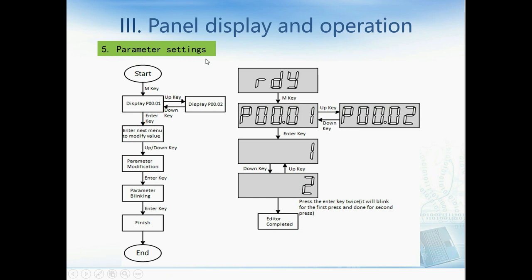Here I will show you how to control from the front panel. First, we click the M button, and then we can see P0.1, which means parameter 1. We can use the up key to switch to parameter 2, or the down button to switch from parameter 2 back to parameter 1.